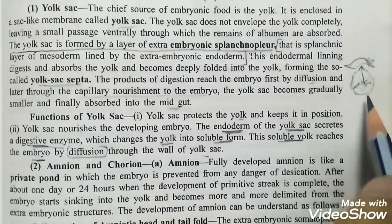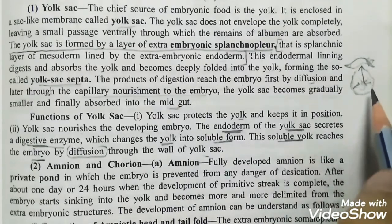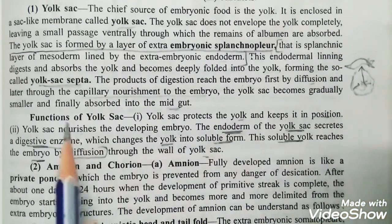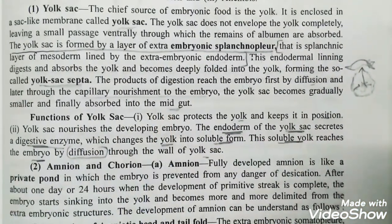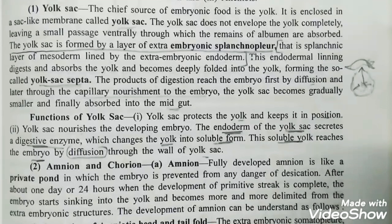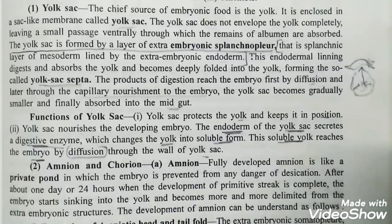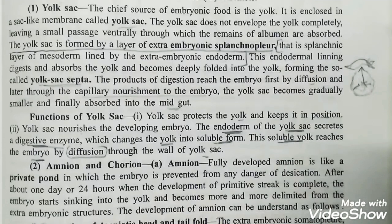We have seen that nourishment occurs through diffusion. After a while, capillary nourishment begins. The embryo has capillaries, and through these capillaries nourishment is delivered. This is the next stage of the yolk sac.